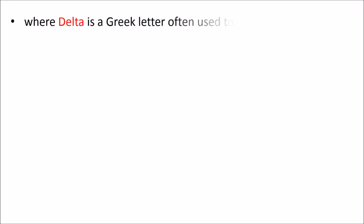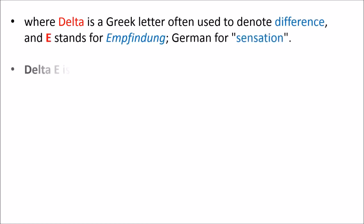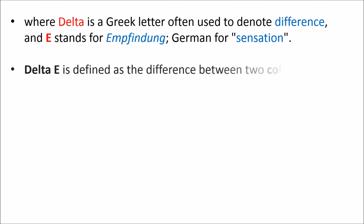Delta E is named using delta, a Greek letter often used to denote difference, and E stands for 'Empfindung', German for sensation. Delta E is defined as the difference between two colors in an L*a*b* color space.